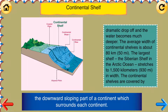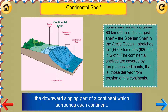The largest shelf, the Siberian shelf in the Arctic Ocean, stretches to 1,500 kilometers, or 930 miles in width. The continental shelves are covered by terrigenous sediments, that is, those derived from erosion of the continents.